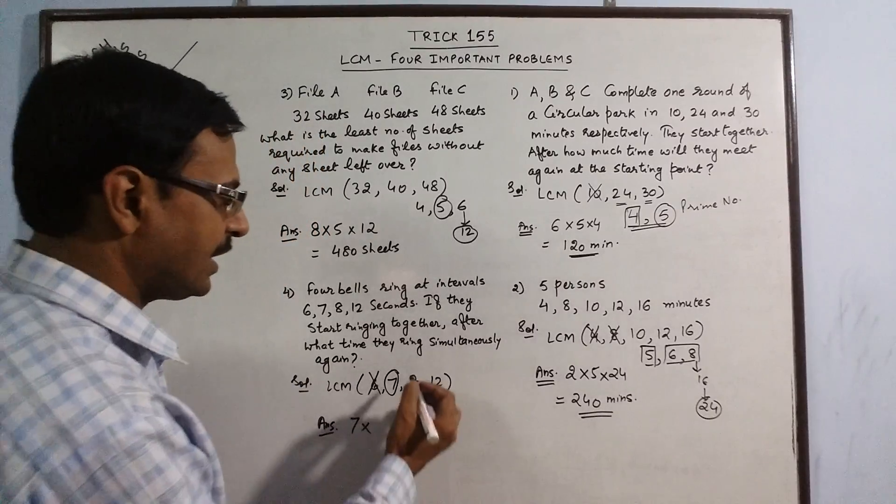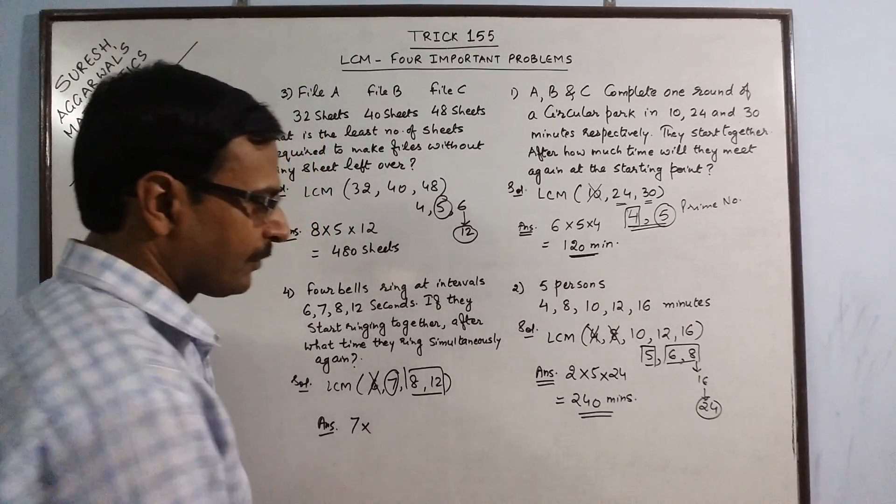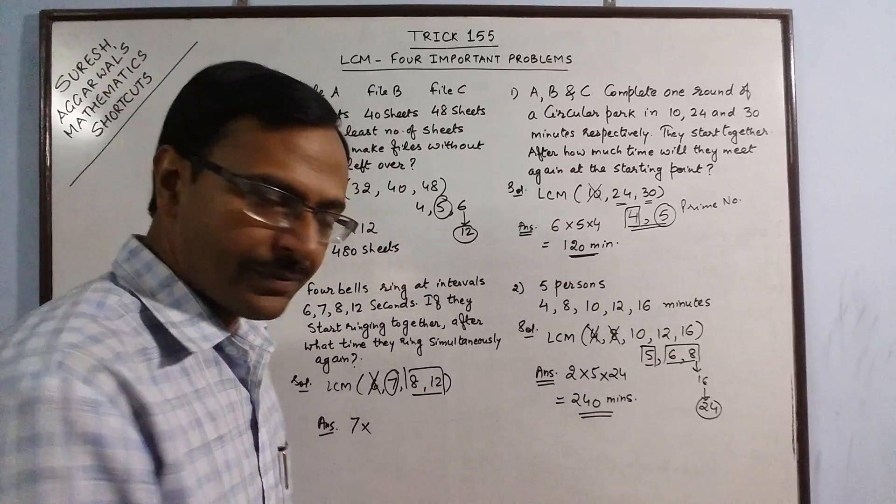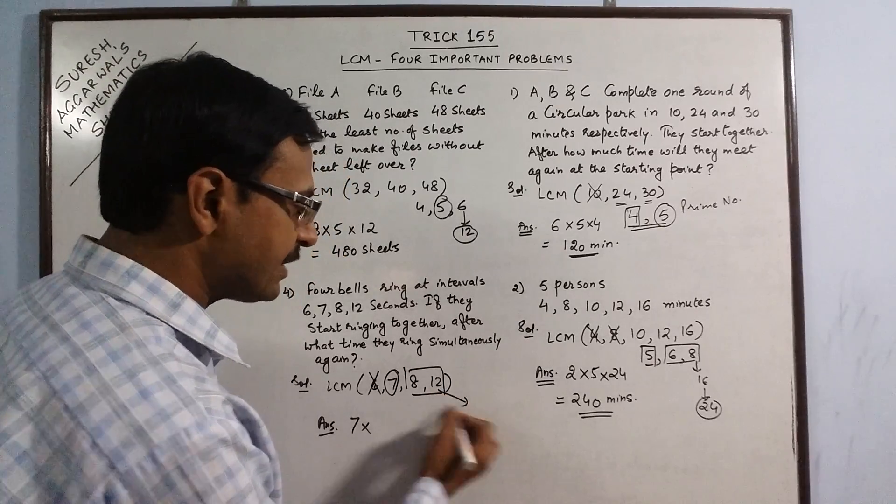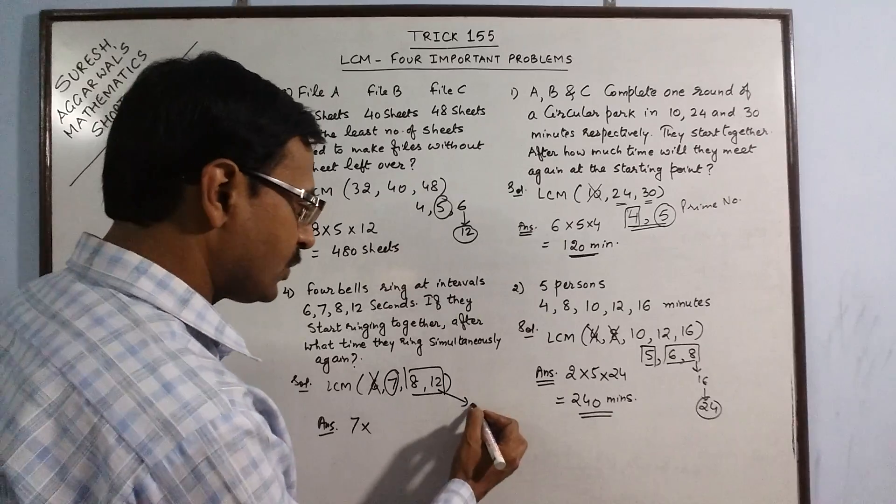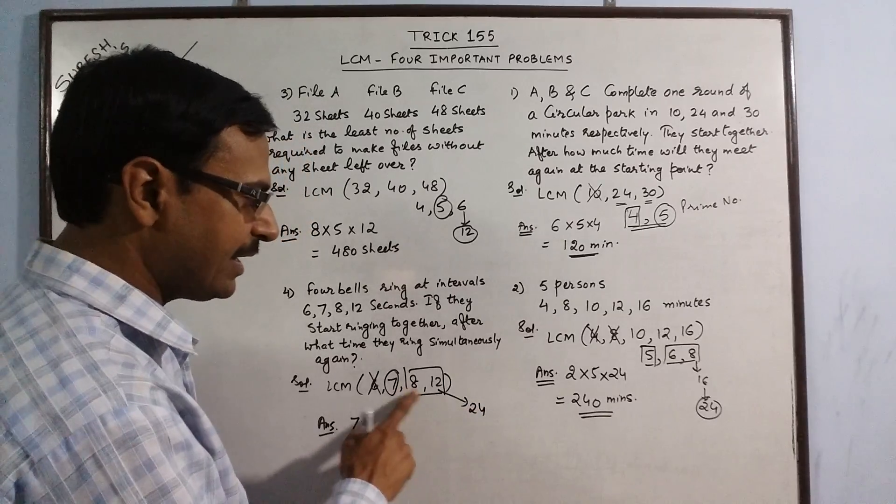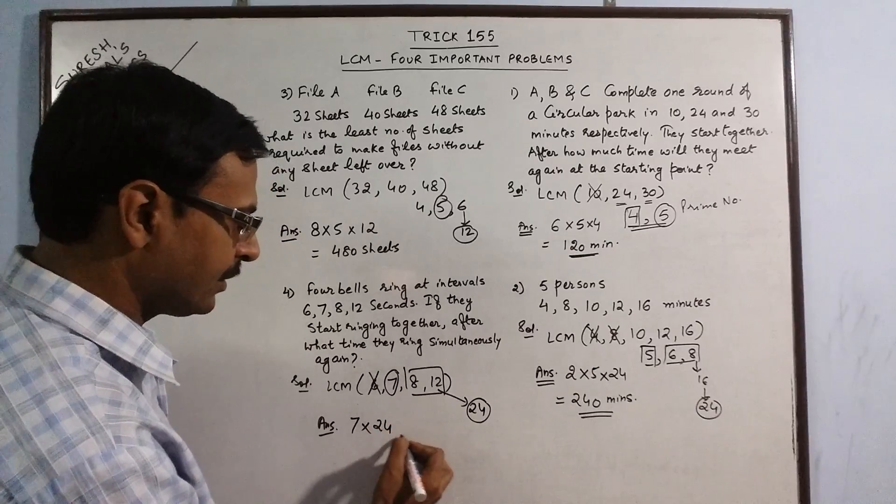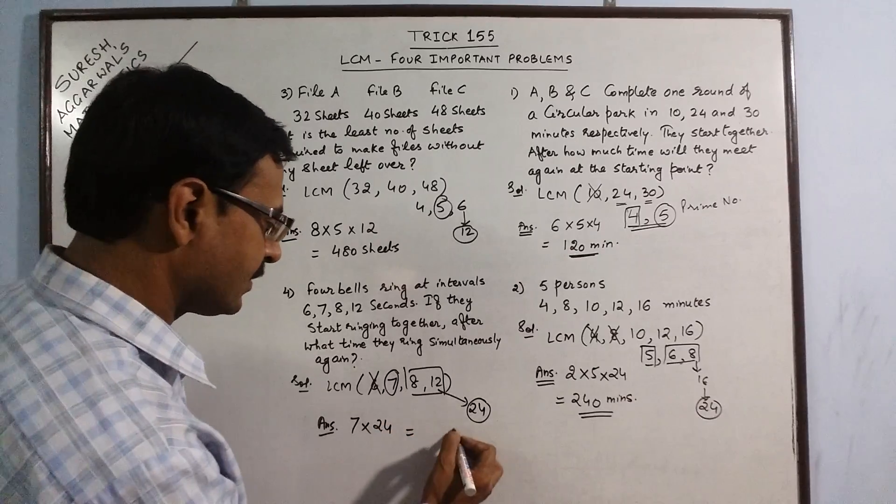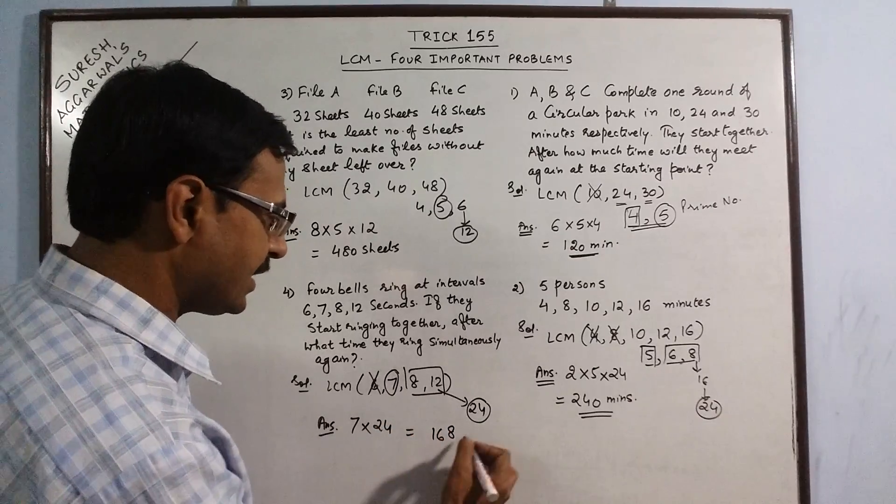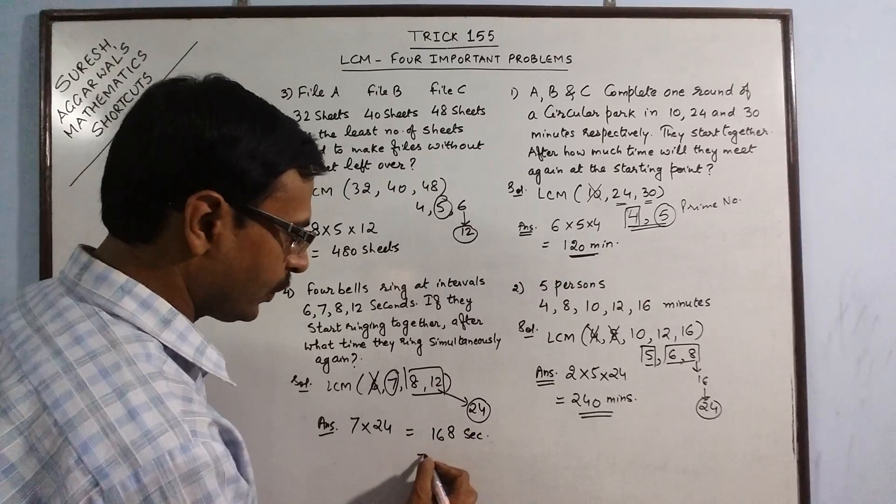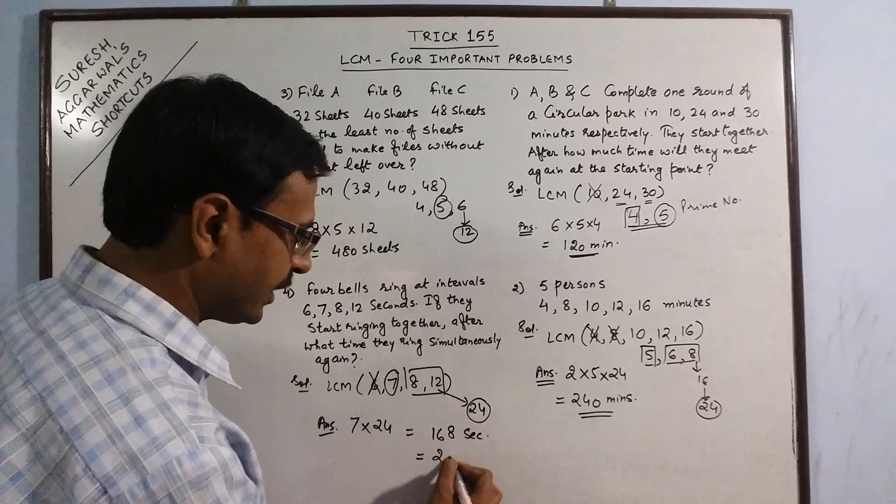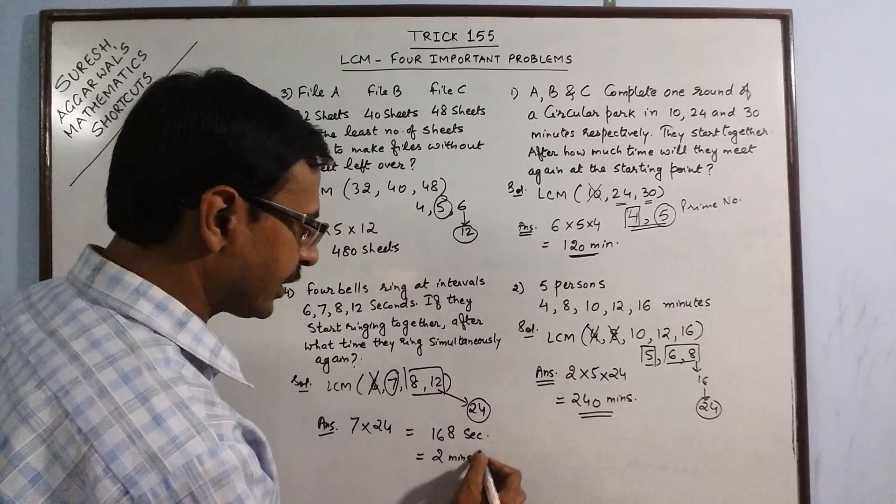8 does not divide 12. So count the multiples of 12: 12, 24. Now 8 divides 24 exactly. So this 24 will come here. Our final answer is 168 seconds, or you can write this as 2 minutes 48 seconds.